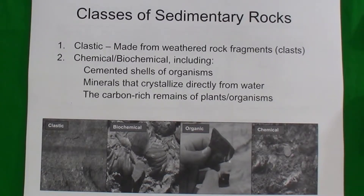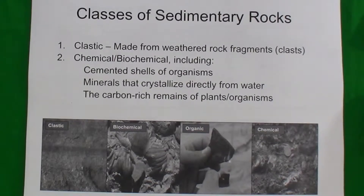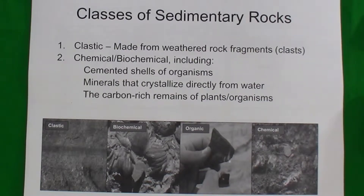The other broad category we'll call chemical or biochemical sedimentary rocks. They are formed by the cementation of shells of organisms or minerals that crystallize directly from water. They can also form from the carbon-rich remains of plants and other organisms.